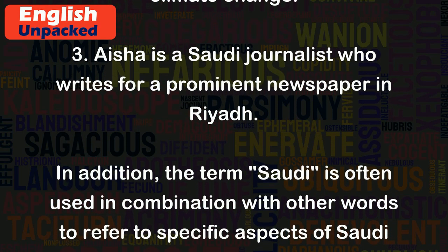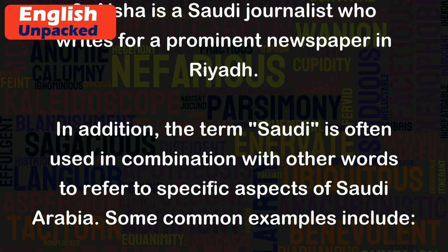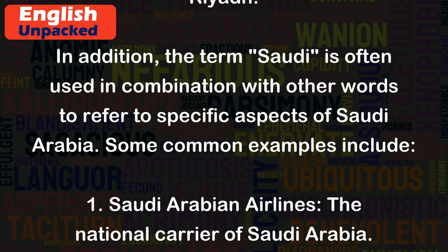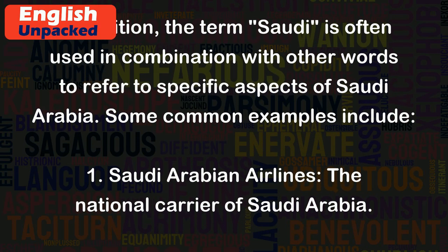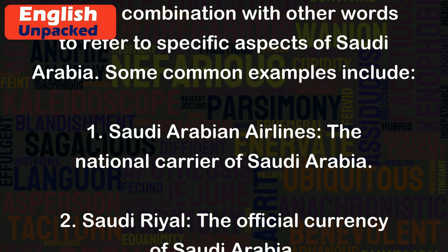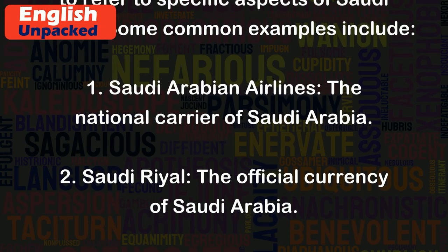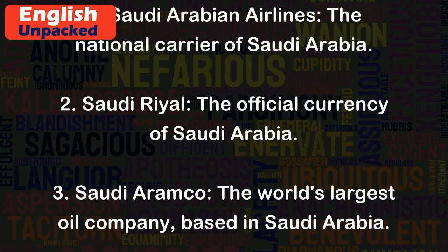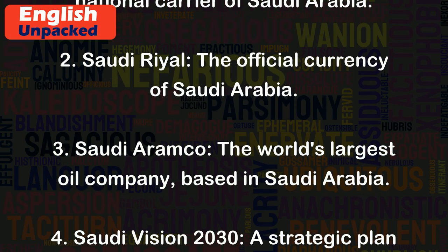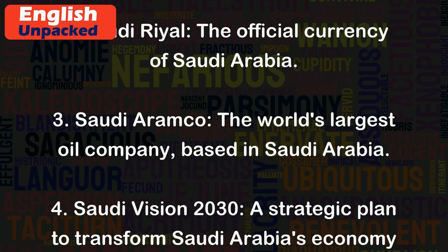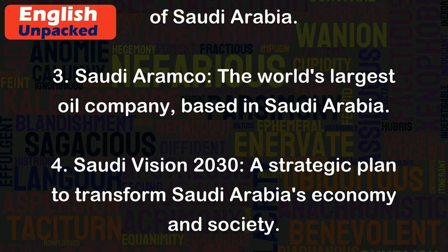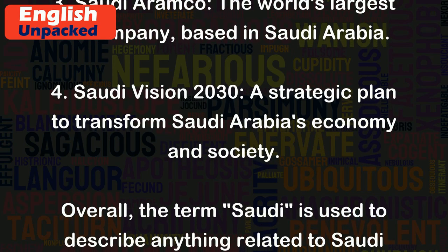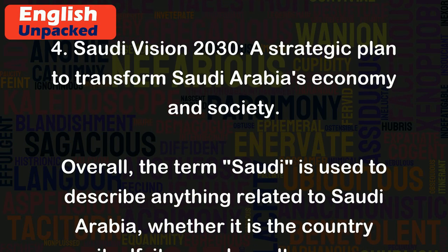In addition, the term 'Saudi' is often used in combination with other words to refer to specific aspects of Saudi Arabia. Some common examples include: 1. Saudi Arabian Airlines, the national carrier of Saudi Arabia. 2. Saudi Rial, the official currency of Saudi Arabia. 3. Saudi Aramco, the world's largest oil company, based in Saudi Arabia. 4. Saudi Vision 2030, a strategic plan to transform Saudi Arabia's economy and society.